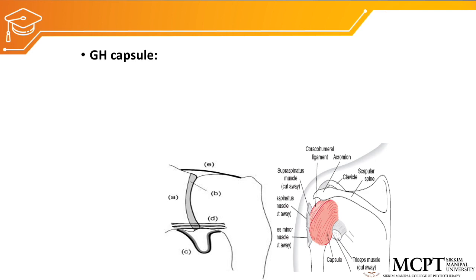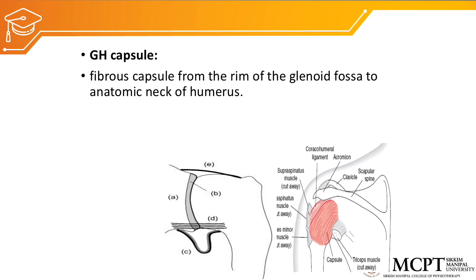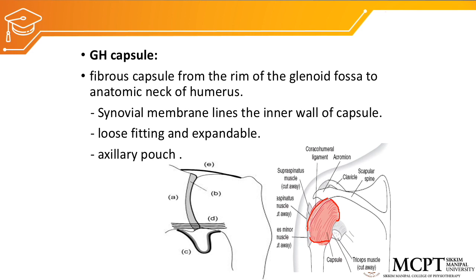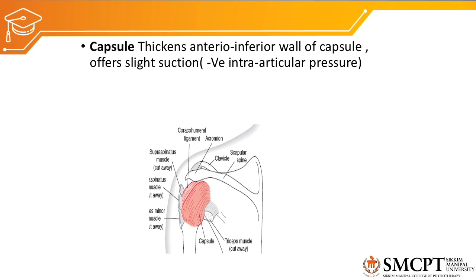The next structure is the glenohumeral capsule. The fibrous capsule extends from the rim of the glenoid fossa to the anatomical neck of the humerus. The synovial membrane lines the inner wall of the capsule. It is loose-fitting and expandable. On the inferior aspect, the capsule forms a pouch structure called the axillary pouch, which is about 2.5 centimeters in length. The glenohumeral capsule creates a slight suction effect, generating negative pressure inside the glenoid cavity, which sucks in the humeral head and increases joint stability.